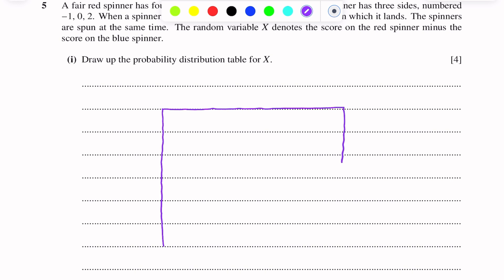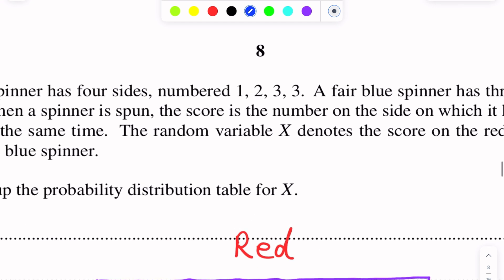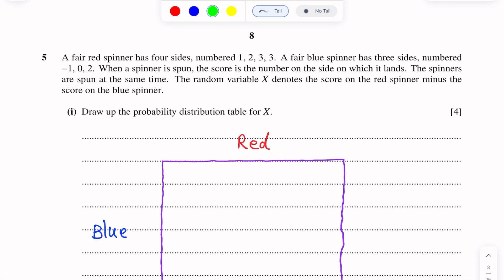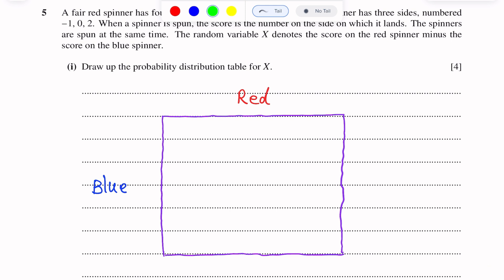There are two spinners: red and blue. The red spinner has numbers 1, 2, 3, 3 — there are four numbers on the red spinner — so we need four columns.